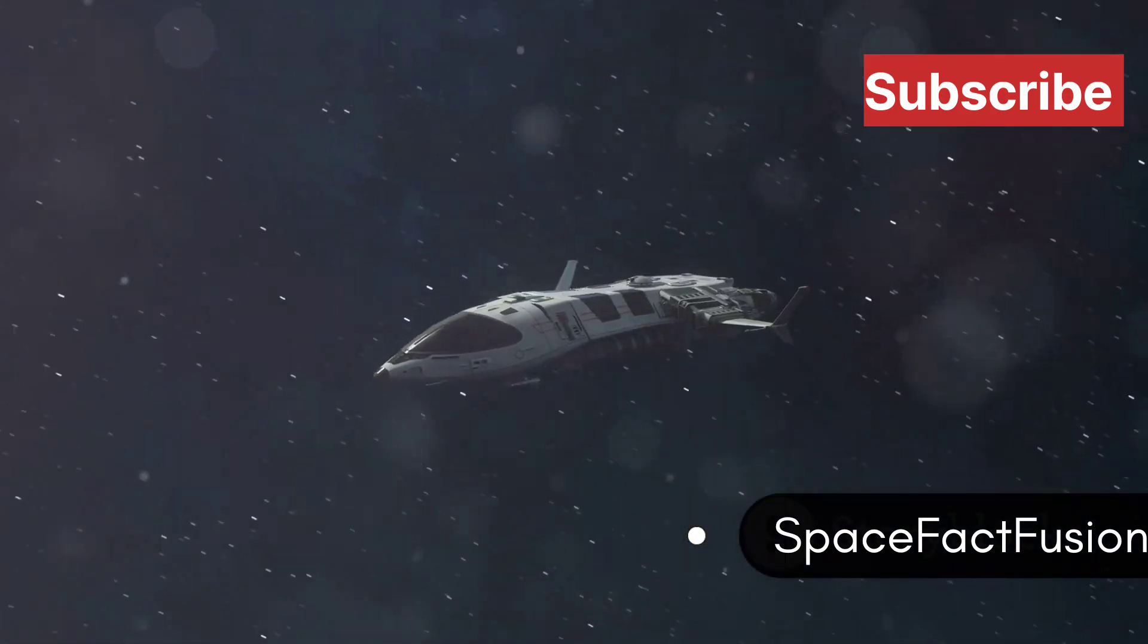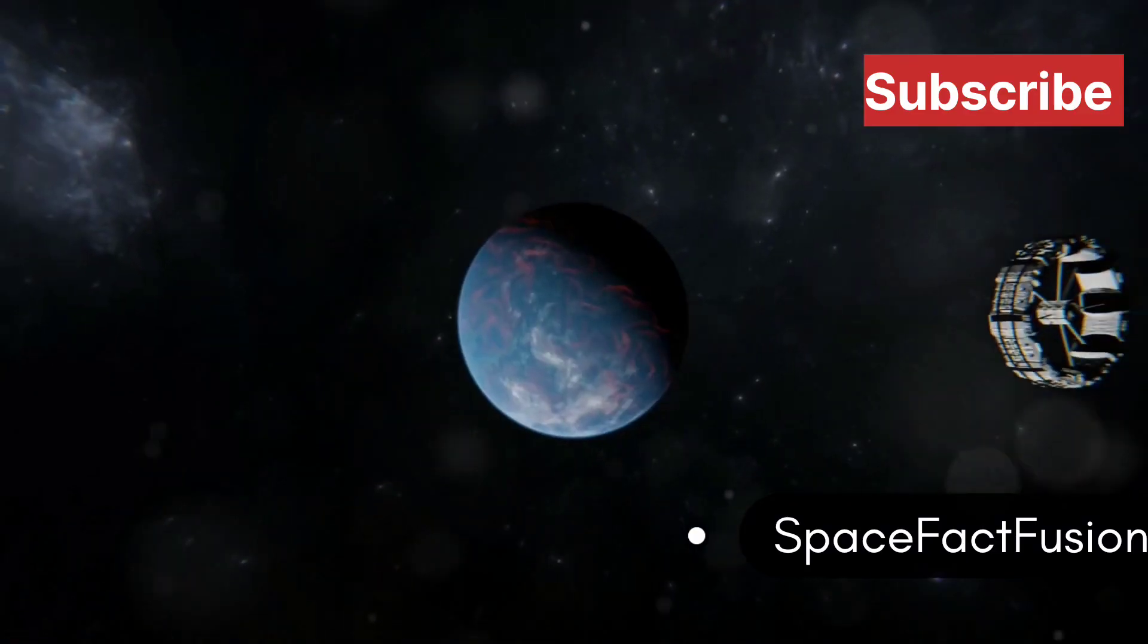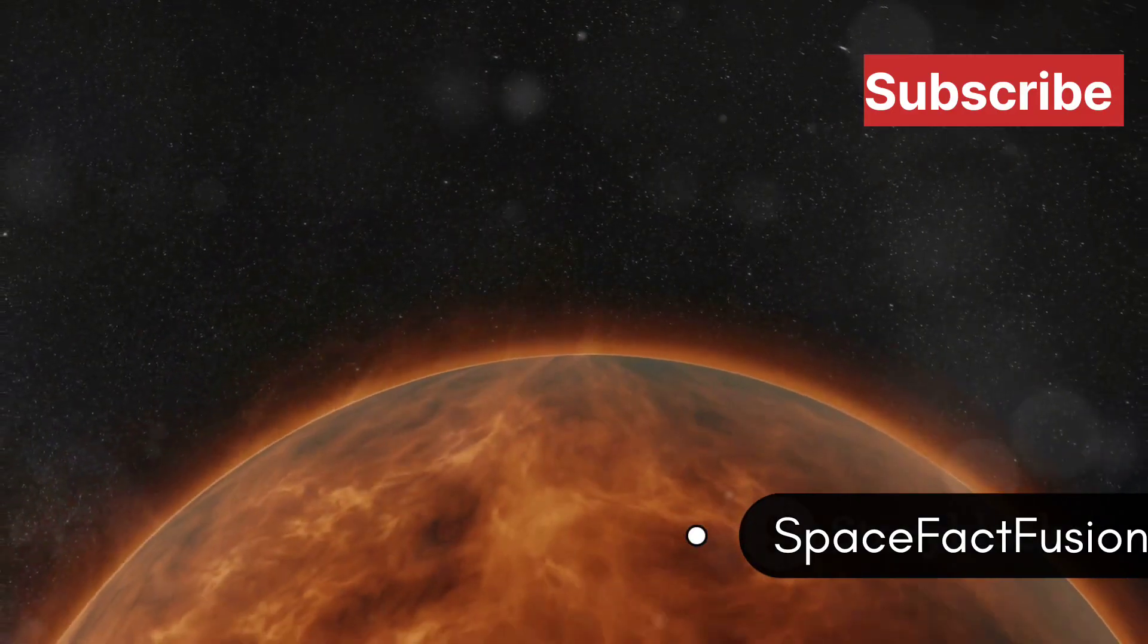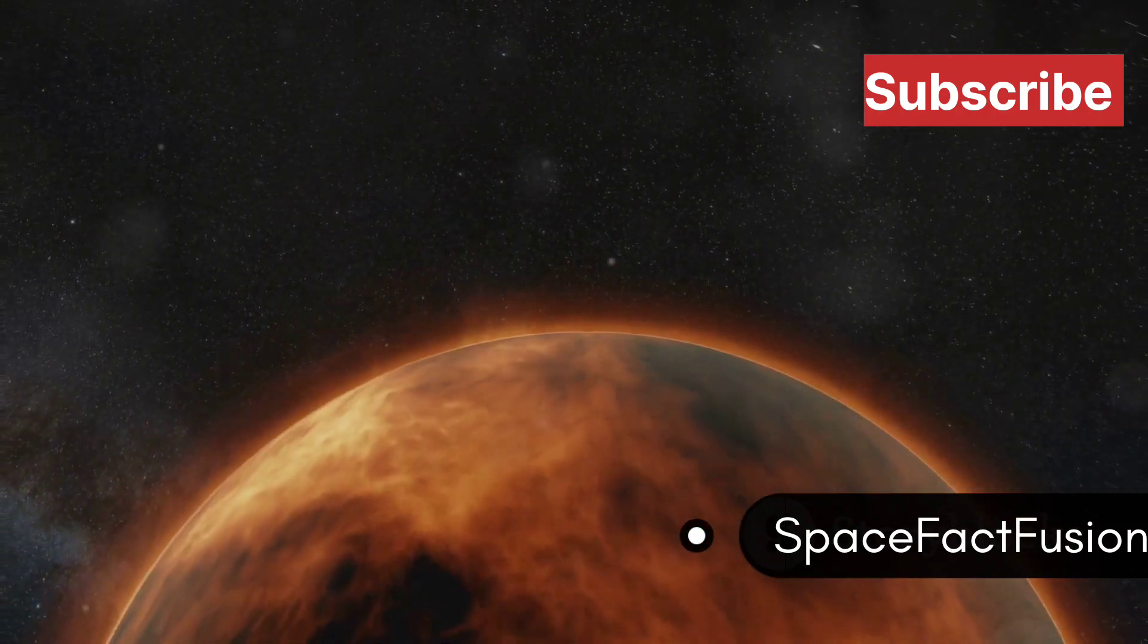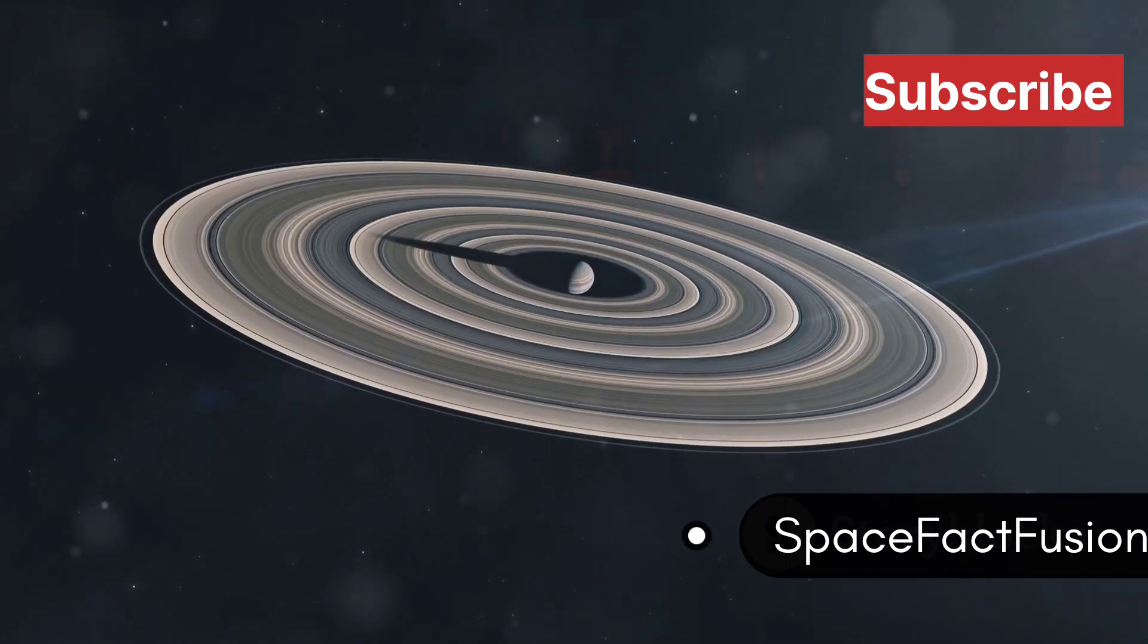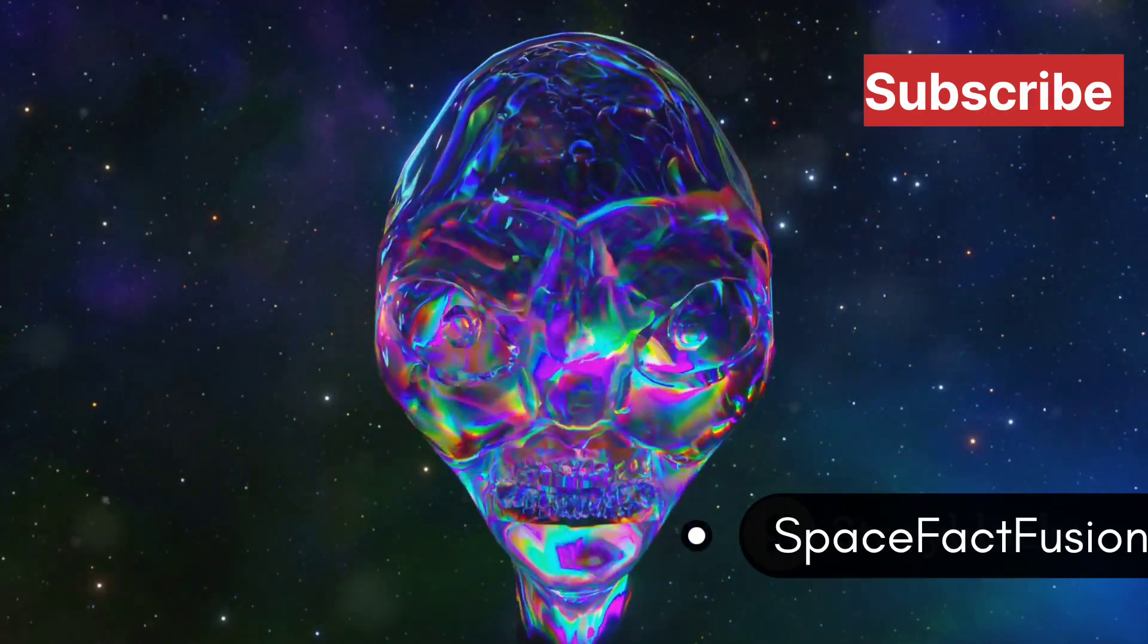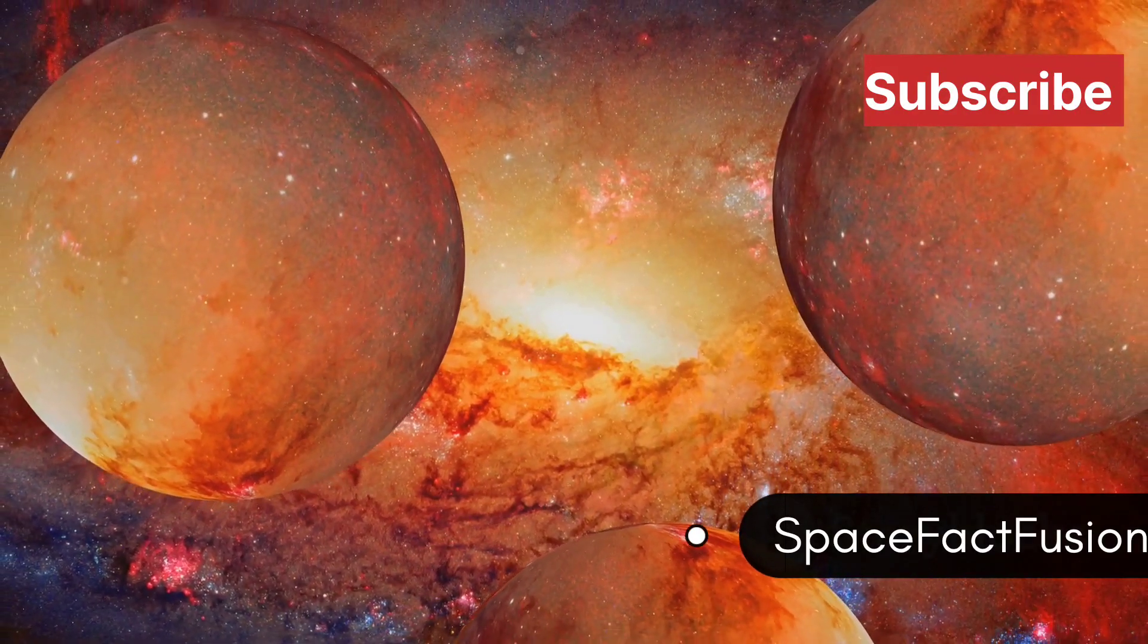Fasten your seatbelts as we visit 55 Cancri e, a planet made largely of diamond. This super-Earth orbits its star at an incredibly close distance, completing an orbit in just 18 hours. The surface temperature on the day side is estimated to be a scorching 4,900 degrees Fahrenheit. Scientists believe that 55 Cancri e formed in a system rich in carbon. Under extreme heat and pressure, this carbon has likely crystallized to form diamond. It's estimated that the planet could be worth a staggering 26.9 nonillion dollars.